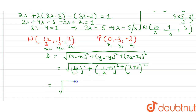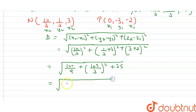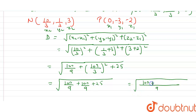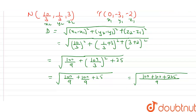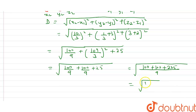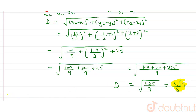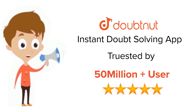So it is √[100/9 + (10/3)² + 25]. Taking LCM of 9: √[(100 + 100 + 225)/9] = √(425/9). Since 425 = 25×17, this is 5√17 / 3. So the distance of the point from the plane measured parallel to the line is 5√17/3. This is our answer.